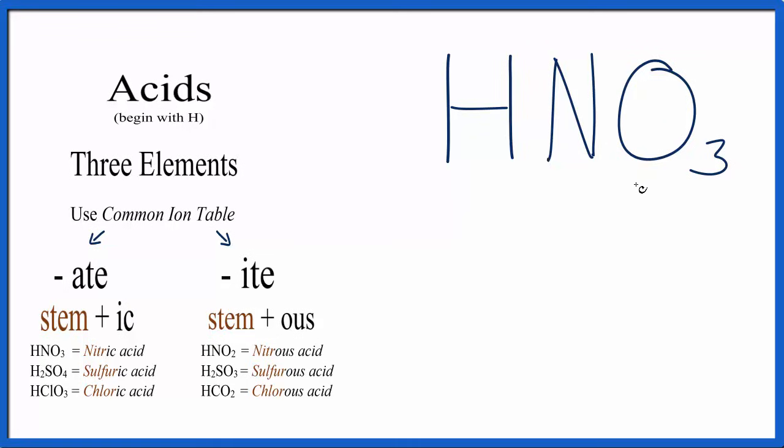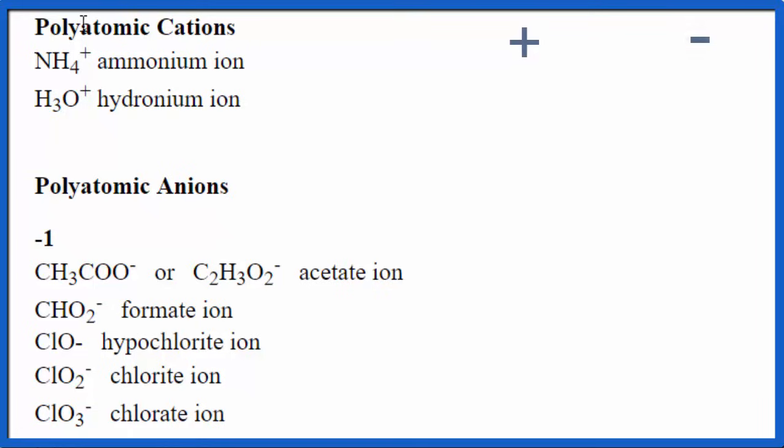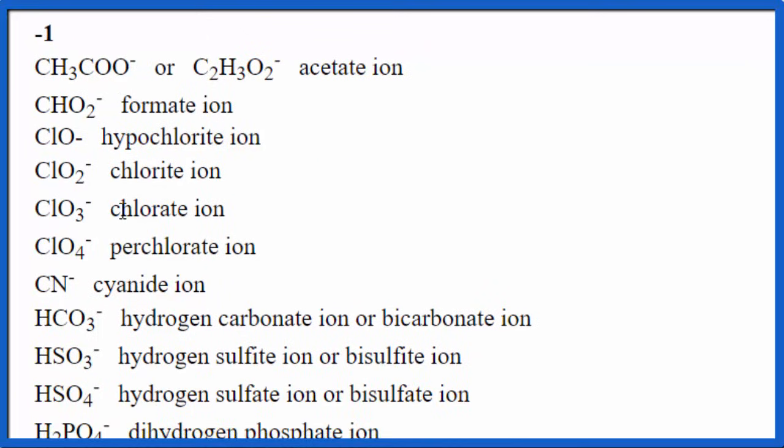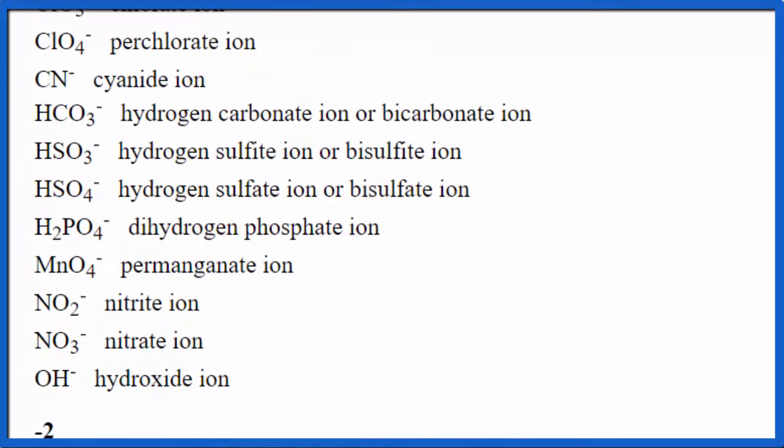So we have this NO3 here, and we're going to look it up on the common ion table. Usually you're given one of these common ion tables in class or in tests. Check with your teacher, though, to be sure. So we have H, the plus sign, NO3, therefore it needs a minus sign. So we're going to look up NO3- on the common ion table. So we have polyatomic cations, those are the positive ones. Anions, those are negative. We have negative one, and we're looking for NO3-. And here we go. NO3- is the nitrate ion.